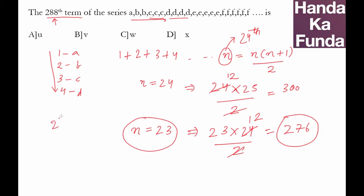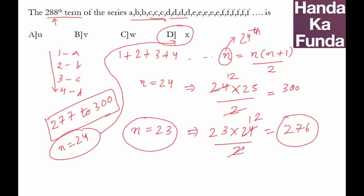From position number 277 to position number 300, it will be letter number 24. And which letter is 24? Well, you know that there are 26 letters, 26 is Z, 25 is Y, and 24 is given to us here in option number D. It is X and that is our answer, option D.